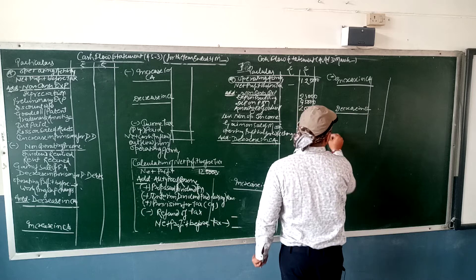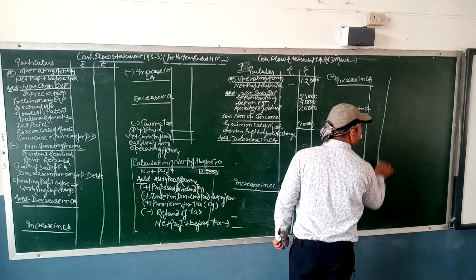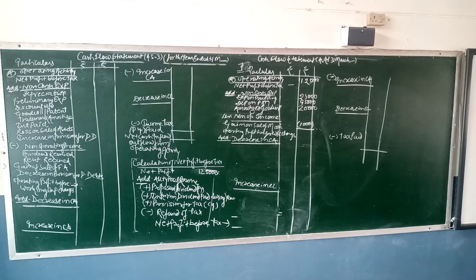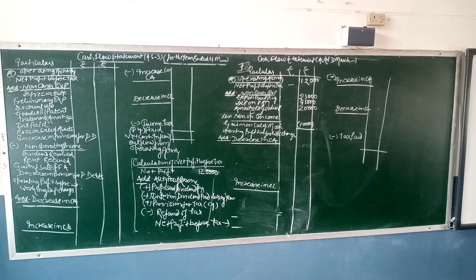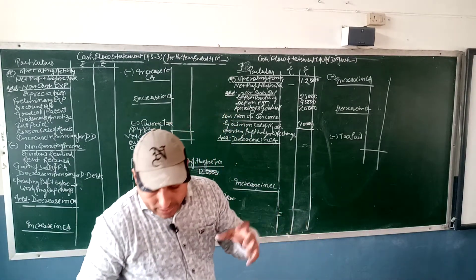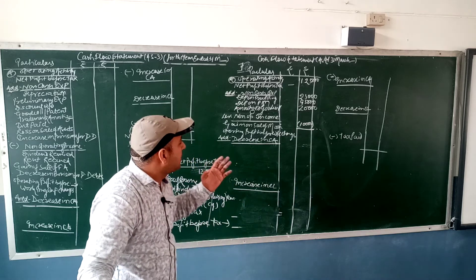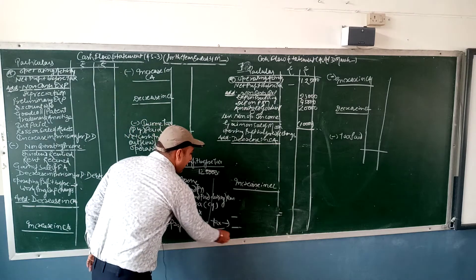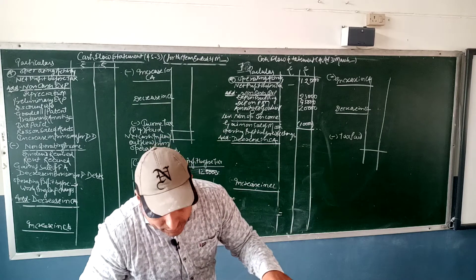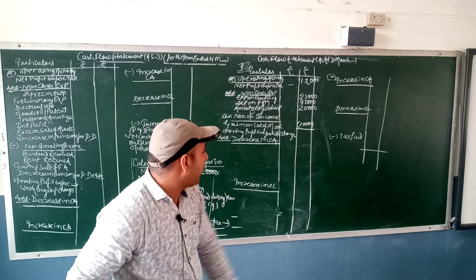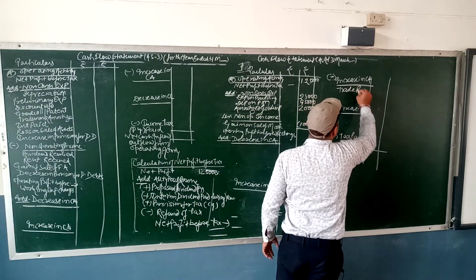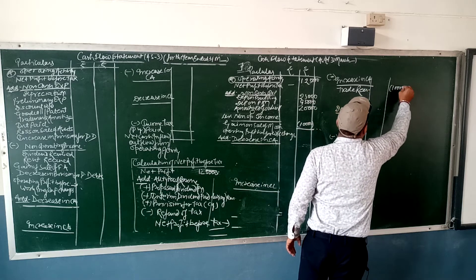Next is decrease in CA — plus; increase in CA — minus. Then current liabilities, then income tax paid. Check in the question what current assets and liabilities are given. Tax paid is given. Net profit before tax is 1,25,000 which we have calculated. Trade receivable 35 to 45 — trade receivable has increased by 10,000, so minus 10,000.